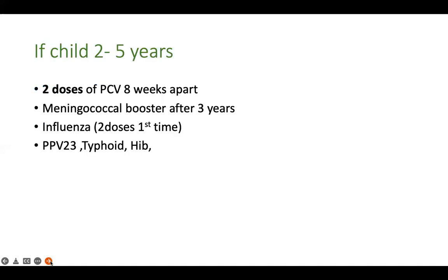For children between two to five years of age: two doses of PCV should be given eight weeks apart, rather than a single dose as in older children. The meningococcal conjugate vaccine booster dose should be given after three years, not five; subsequent boosters can then be given every five years. Influenza also requires a second dose after one month in this age group. All other vaccines follow the same schedule as the older age group.